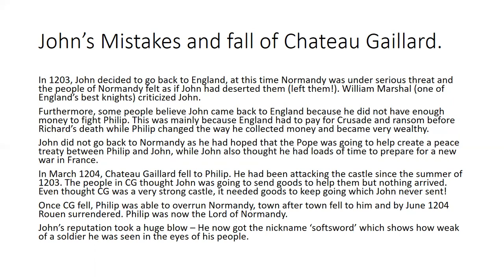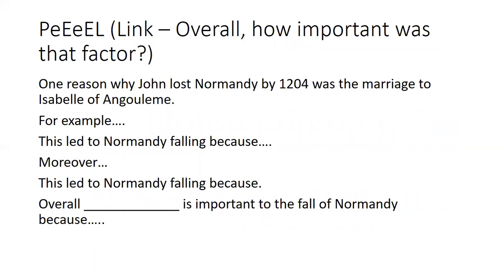This was a huge blow to John's reputation and he gained the nickname 'Soft Sword,' showing how weak a soldier he appeared in the eyes of his people. As a practice exercise, look at the three factors and write a PEEL paragraph. A starter is provided on screen: 'One reason why John lost Normandy was the marriage to Isabella of Angoulême.' Complete that paragraph as a revision exercise. This lesson covers why John lost Normandy by 1204 - and as a spoiler, it doesn't get any better from here.